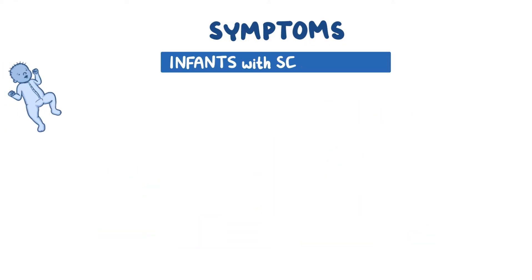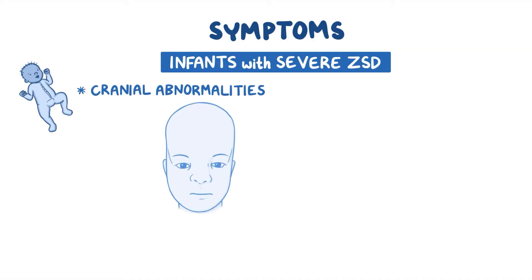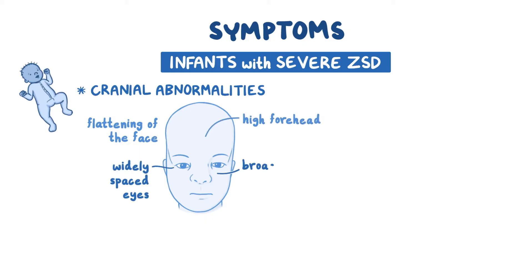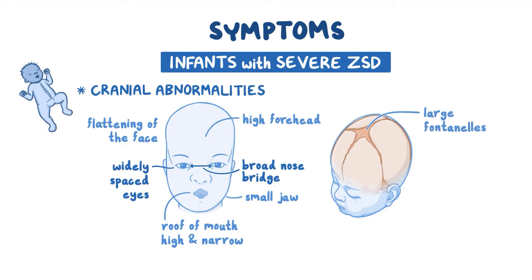Infants with severe ZSD often, but don't always, have cranial abnormalities such as flattening of the face, high forehead, widely spaced eyes, broad nose bridge, and an abnormally small jaw. The roof of the mouth may be unusually high and narrow, and the fontanelles may feel abnormally large.